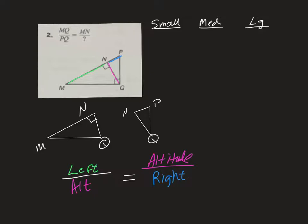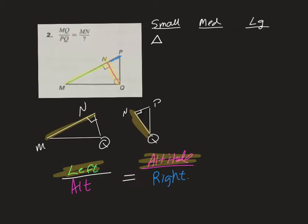Because of what we already know about the proportion, we know that MN — because that's the left part of that hypotenuse — is corresponding with NQ, because that is part of the theorem and part of the proportion. So I'm going to start writing my statement of similarity, starting with the small triangle, and I'm going to do MN. I'm going to write the vertex that's not the right angle first, and then the right angle second.